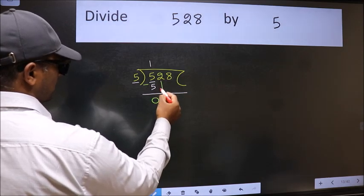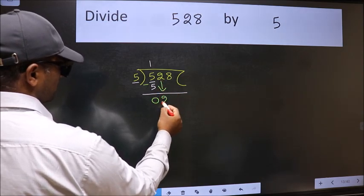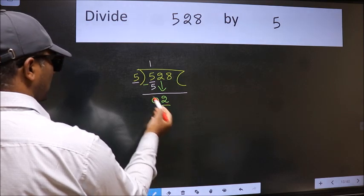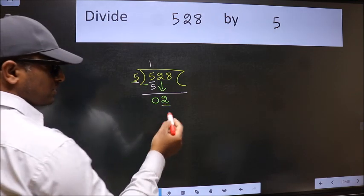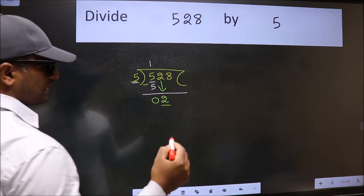After this, bring down the beside number. So 2 down. Now here we have 2 and here 5. 2 is smaller than 5, so we should bring down the second number.